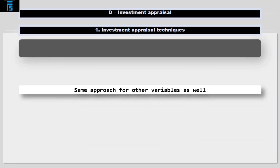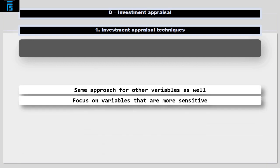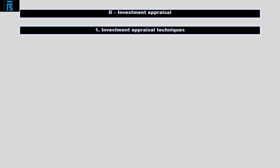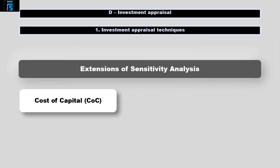The same approach can be taken with the vast majority of cash flows that have gone into the NPV calculation. The decision maker can then focus on the variables they are more sensitive to, to make sure that their estimates are reasonable. There are a couple of exceptions to this though: sensitivity to the cost of capital and sensitivity to the life of the project.